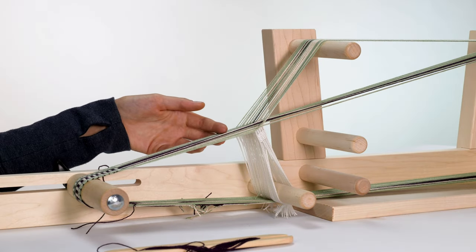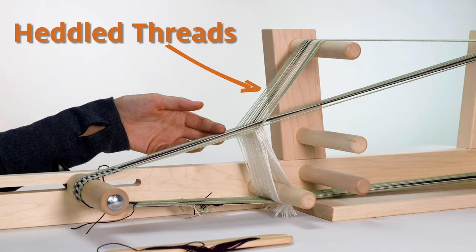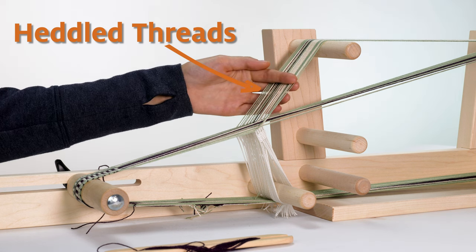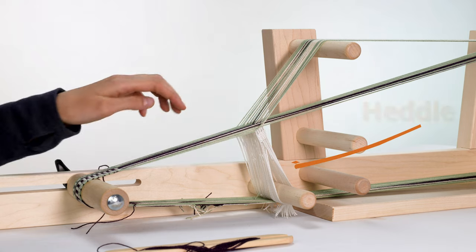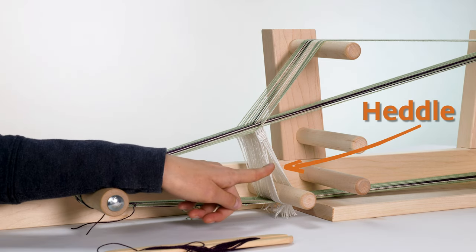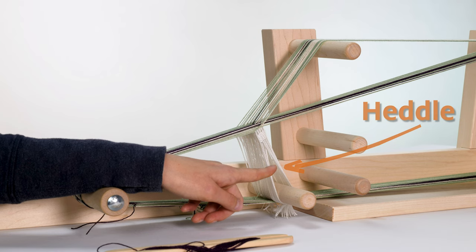The warp threads are split into two different groups: the threads that are heddled and the threads that are unheddled or open. On an ankle loom, a heddle is a device that holds the threads stationary. It keeps all those warp threads at the same height.